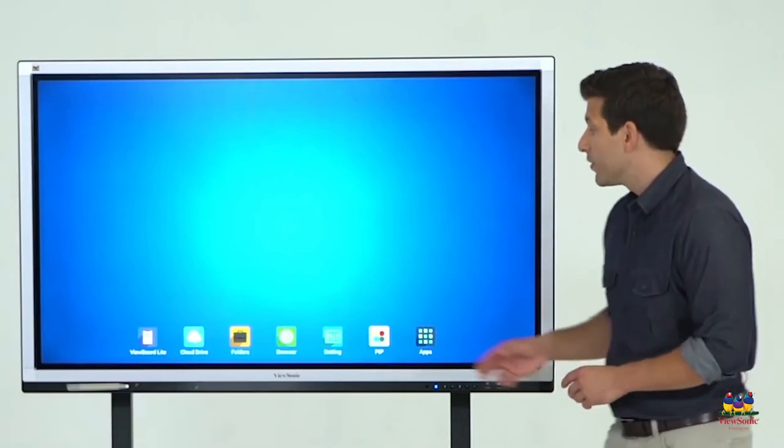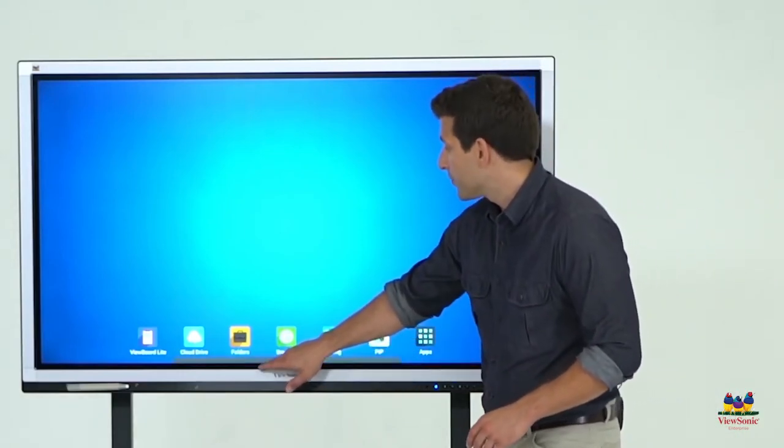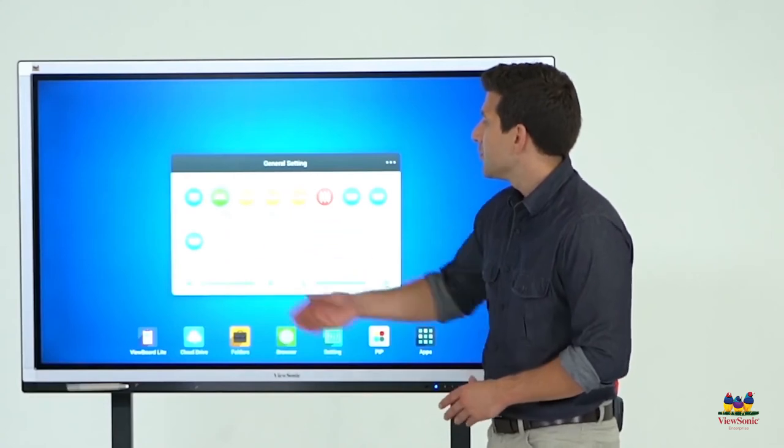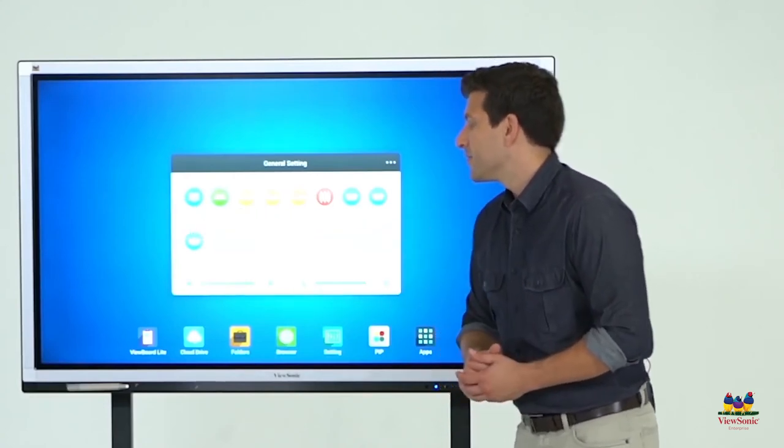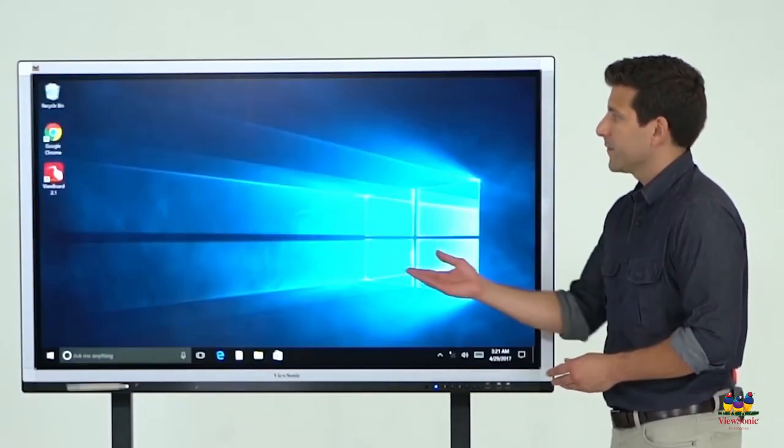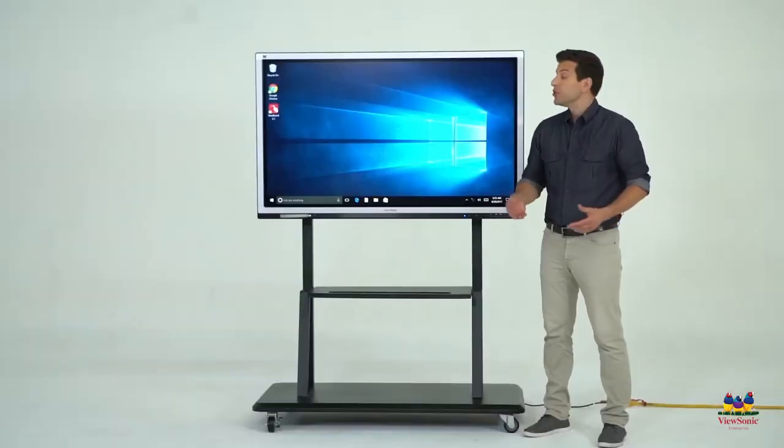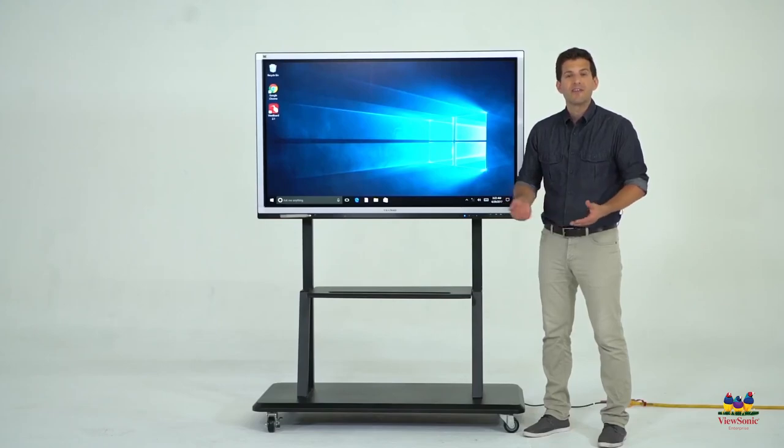Now if you want to switch from Android to PC, you'll go to the general settings by going to the very bottom of the screen going up and you'll see the different options. Hit the PC button and it automatically switches to Windows. And with that, you successfully set up a ViewSonic ViewBoard interactive display onto a wall mount onto a rolling cart. Thank you for watching our video.